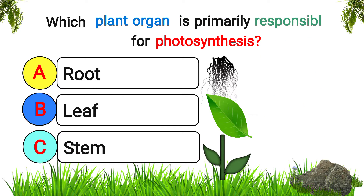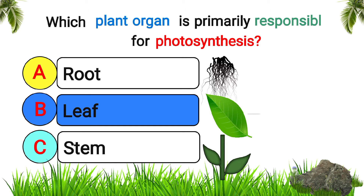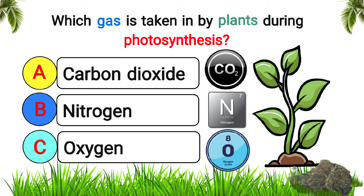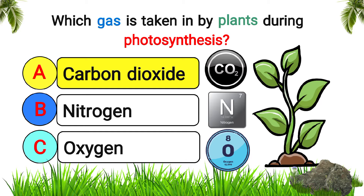Which plant organ is primarily responsible for photosynthesis? Answer: leaf. Which gas is taken in by plants during photosynthesis? Answer: carbon dioxide.